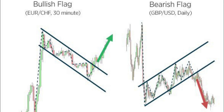Bull flag pattern. The bull flag pattern typically occurs within an uptrend and is characterized by a brief period of consolidation after a significant price increase. The pattern resembles a flag on a flagpole, hence the name. The initial upward price movement is known as the flagpole, and it represents a strong and rapid advance in price.